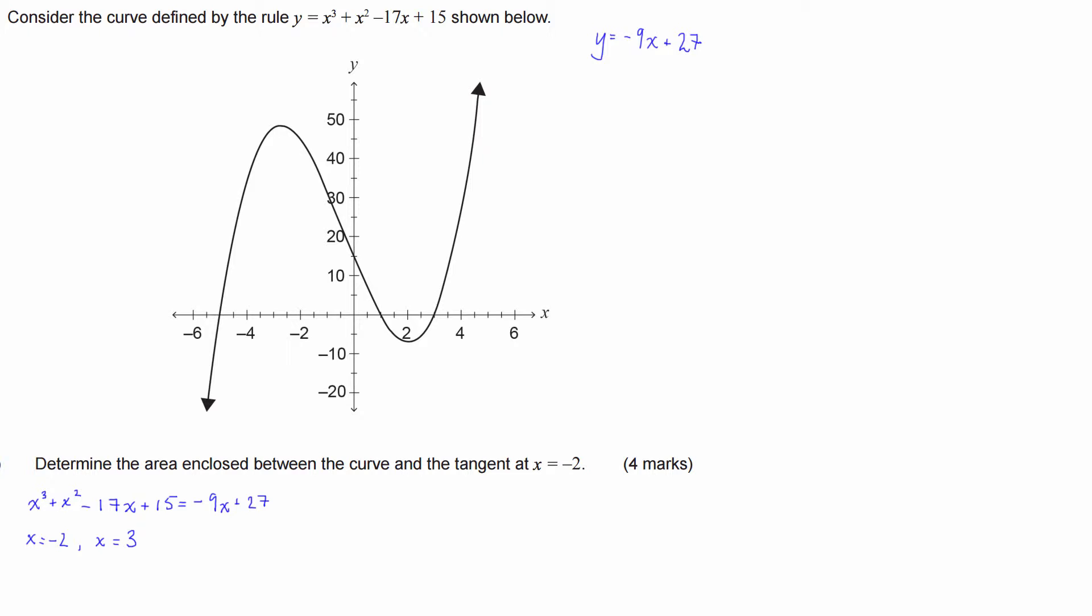From there, if it was me in an exam, I'd draw these two points in. So x equals negative 2 is up here somewhere on the curve and x equals 3 is there. We're going to draw a straight line between them. What we're looking for is the area in between these two shapes, this area here.